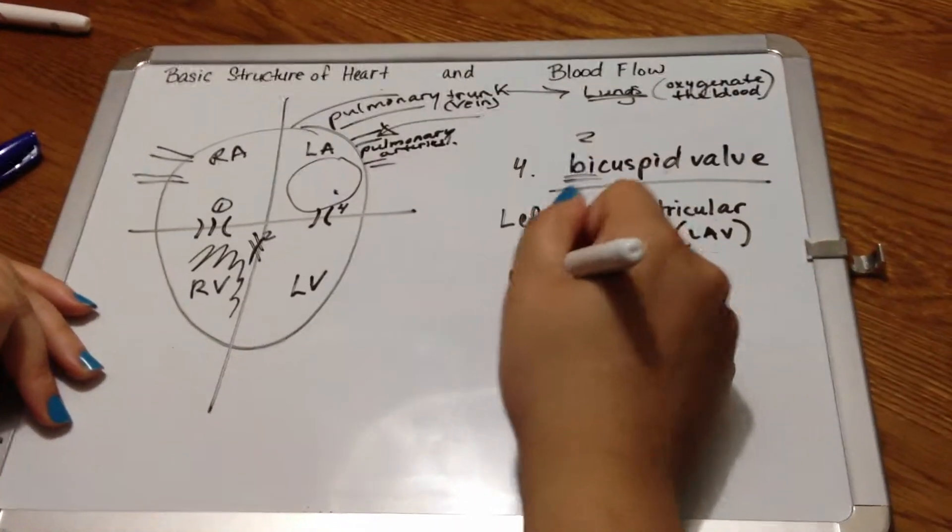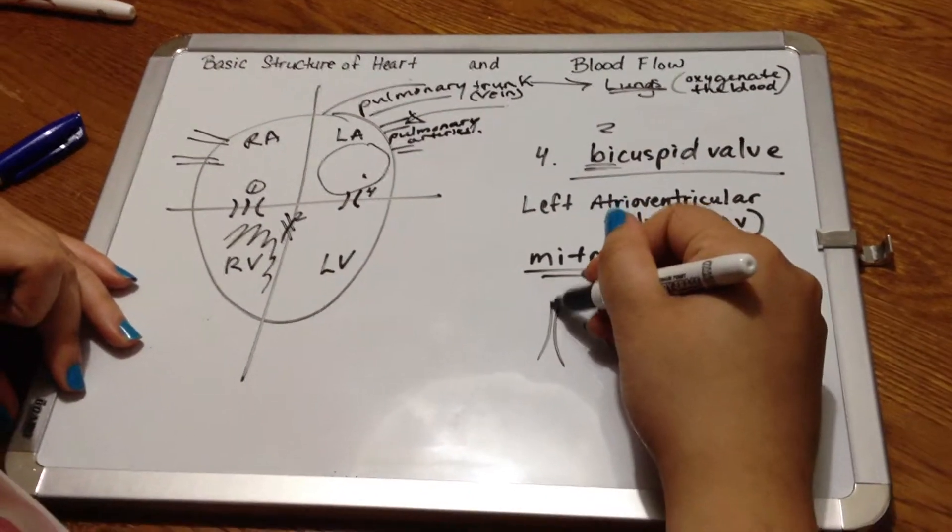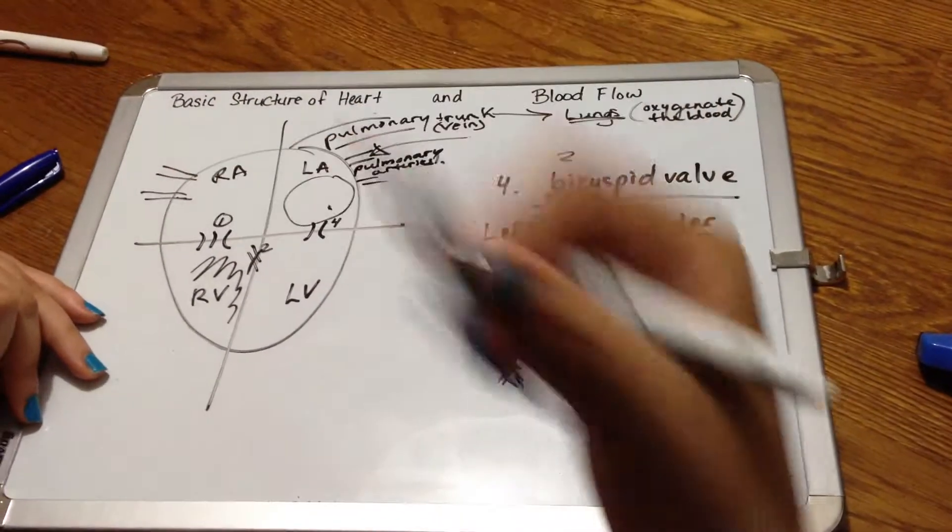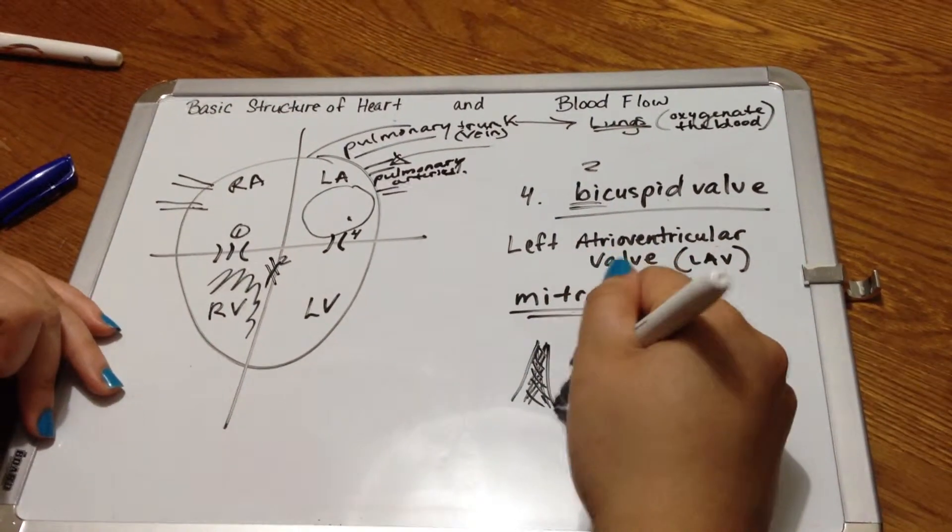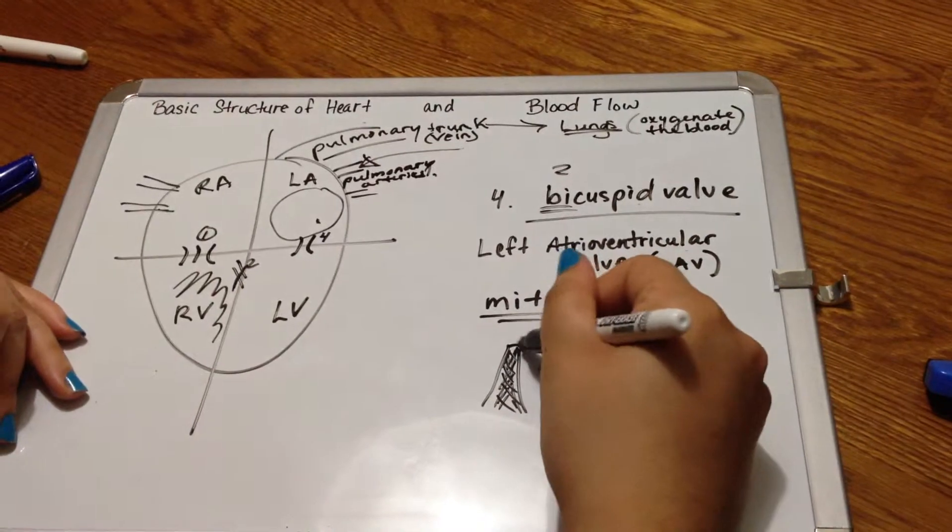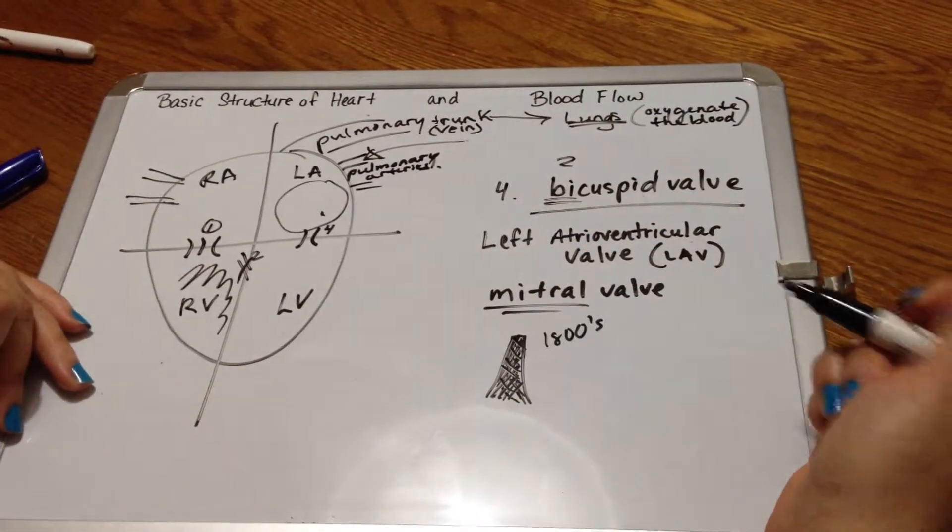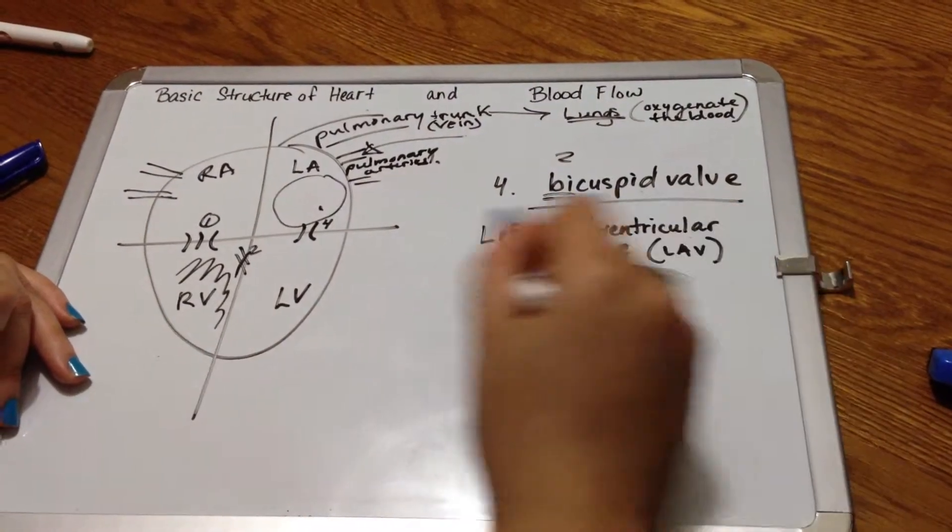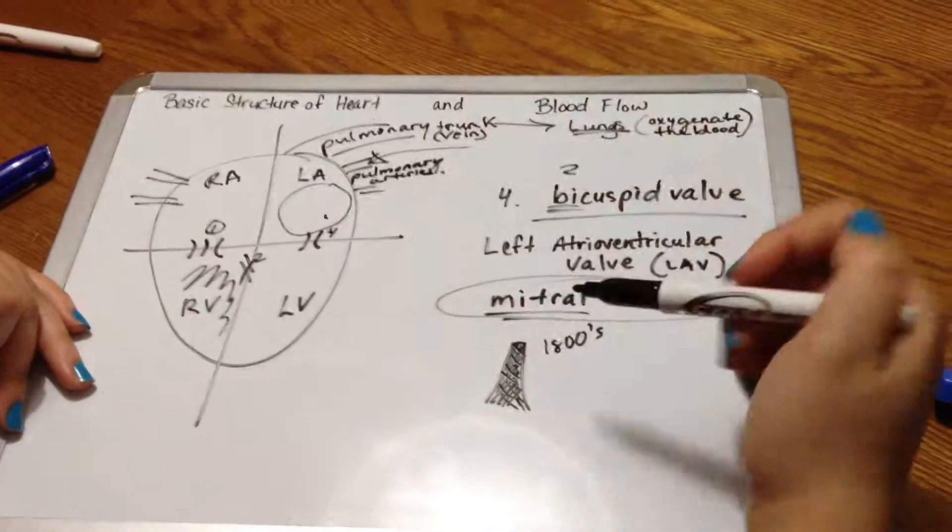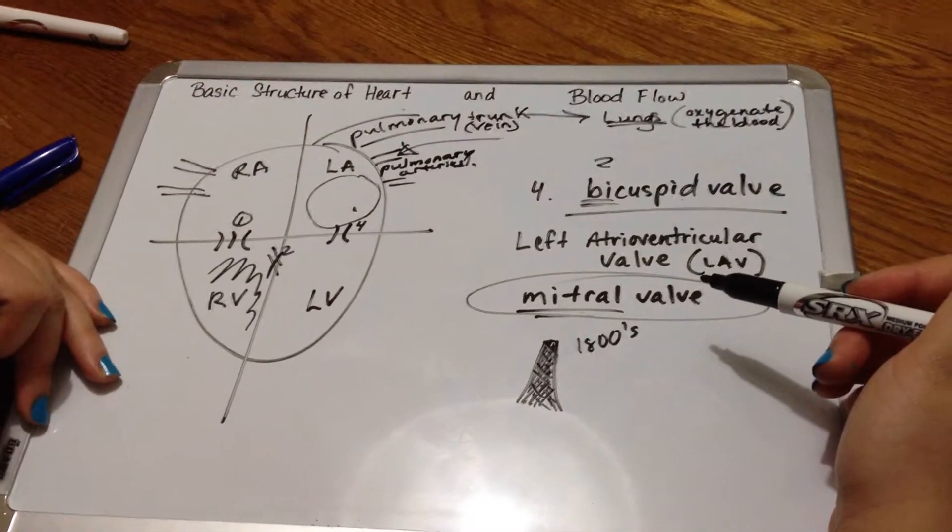The reason why it's called the mitral valve is because mitrals are veils that cover a woman's face when she's getting married. So back in the old 1800s, women would wear this beautiful little veil, and they would get married with it. Well, some scientists thought, you know, this happens to look like a veil, so they called it the mitral valve as a cute way of remembering the shape of it.